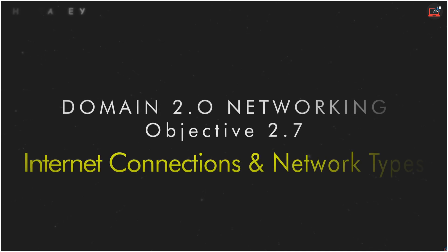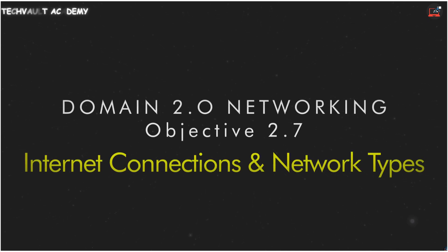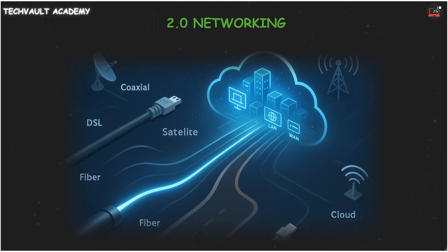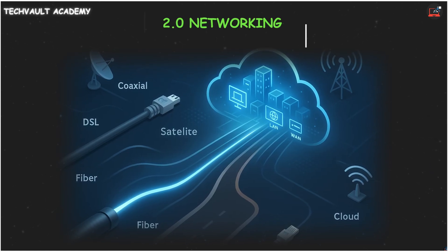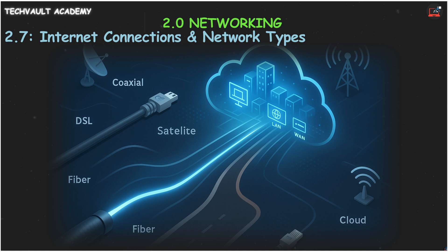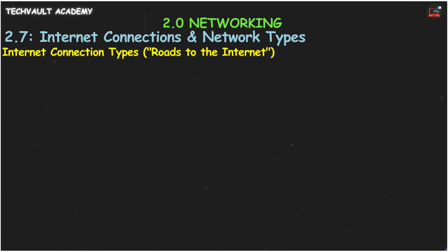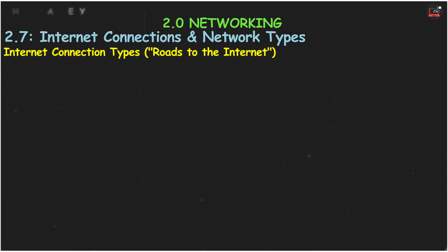We're tackling Objective 2.7, where we'll compare and contrast various internet connection types and network types, along with their unique characteristics. Think of this as understanding all the different roads to get online and the different ways our digital cities are structured. Let's start with internet connection types — the roads to the internet.